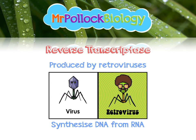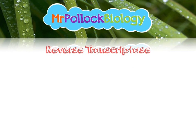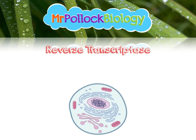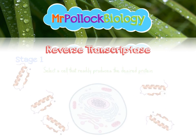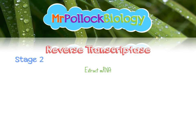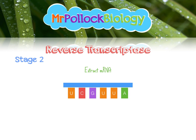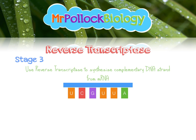How do we make reverse transcriptase work for us? The first step is to find a cell that readily produces the protein that we want. The second stage is we find some mRNA — messenger RNA — and we extract it. Here's a sequence of mRNA that codes for the desired gene. Then we use reverse transcriptase to synthesise a complementary DNA strand from that mRNA, producing a single strand of complementary DNA.